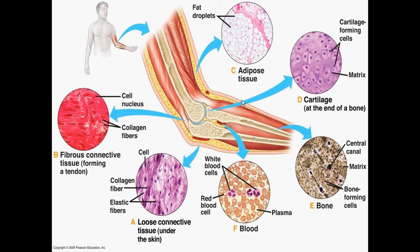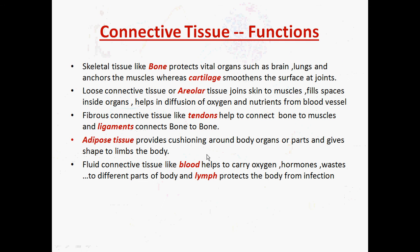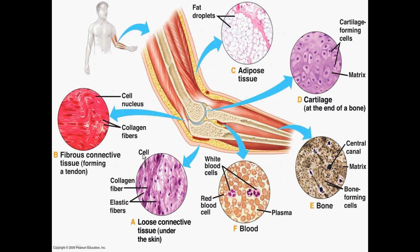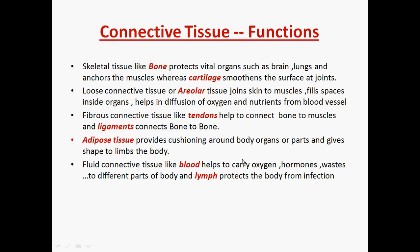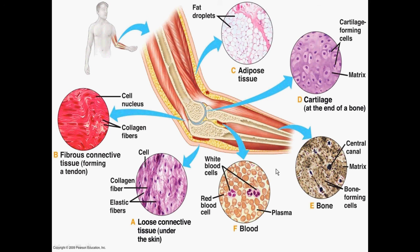The adipose tissue also gives shape to the limbs. Finally, blood — which is a fluid connective tissue — transports nutrients, hormones, and oxygen to different parts of the body, as shown in this figure. The lymph protects the body from any kind of infection. These are the basic functions of the different kinds of connective tissue, and now you should have a good idea about the different kinds of connective tissue present in our whole body, with the help of the figure of the hand.